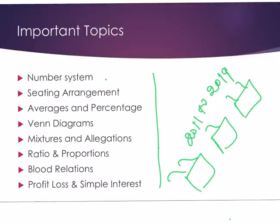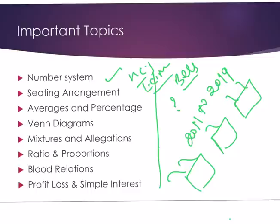In number system, questions come on HCF and LCM — for example, bell-based questions where you need to find HCF or LCM depending on the type of question. Sitting arrangement is a topic students find difficult because they have trouble with east, west, north, and south orientations; solving 3-4 statements where 2-3 fit but the last one doesn't match is a common challenge.